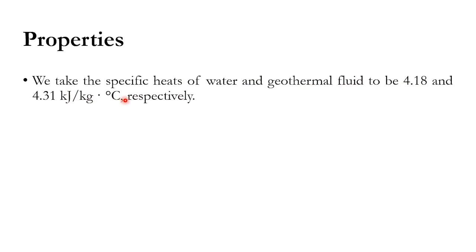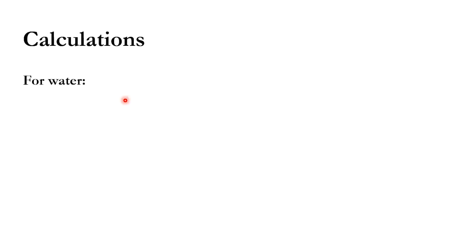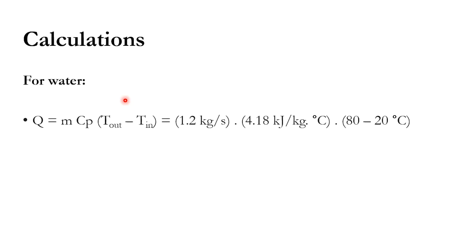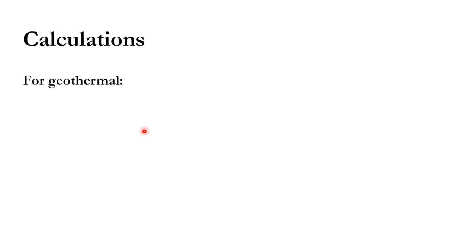You can use different tables to estimate these properties. For water: Q = m·Cp·ΔT, with m = 1.2 kg/s, Cp = 4.18 kJ/kg°C, T_out = 80°C, T_in = 20°C. The heat transfer rate Q is calculated as 301 kW.